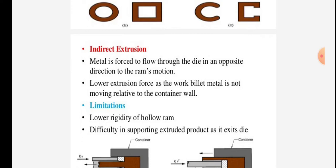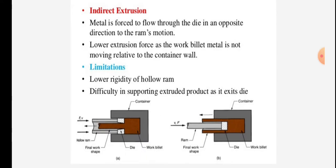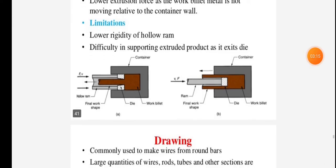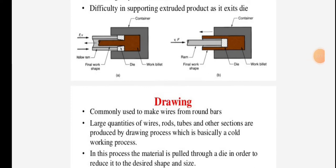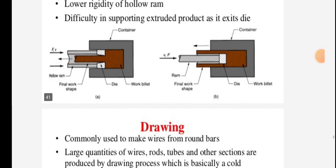Indirect extrusion: In this extrusion, the metal is forced to flow through the die in an opposite direction to the RAM's motion. Lower extrusion force as the work billet metal is not moving relative to the container wall. Limitations include lower rigidity of hollow RAM and difficulty in supporting extruded product as it exits the die.